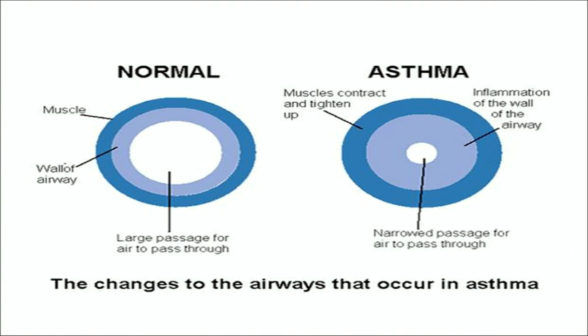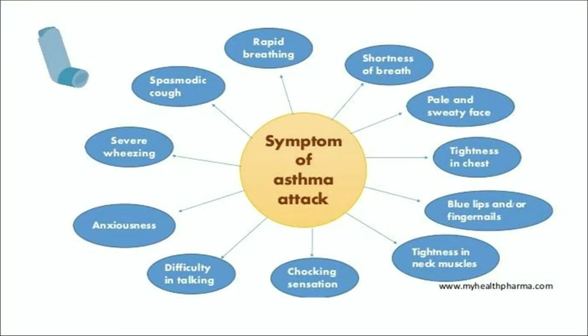In asthma, muscles contract and tighten up, inflammation of the airways takes place, and the passage for air to pass through narrows. Asthma can cause shortness of breath, pale and sweaty face, tightness in chest, blue lips, tightness in neck muscles, choking sensation, difficulty in talking, anxiousness, severe wheezing, cough and rapid breathing. These are the asthma symptoms.